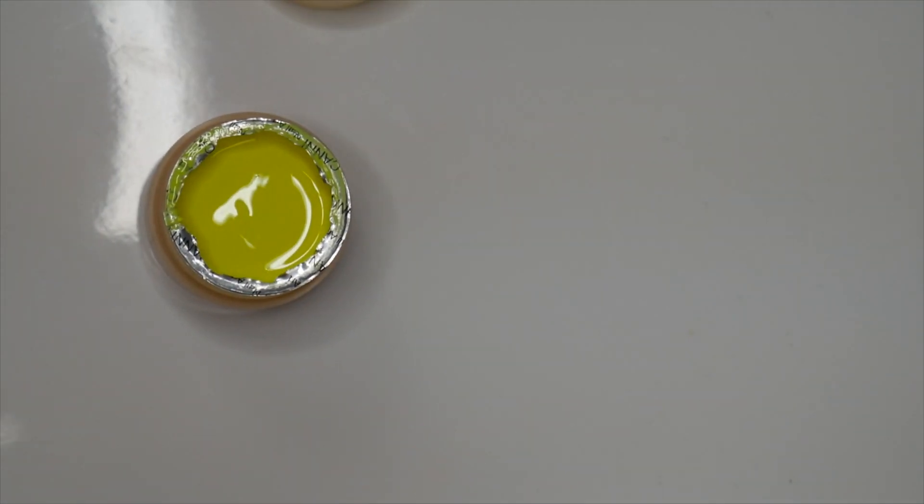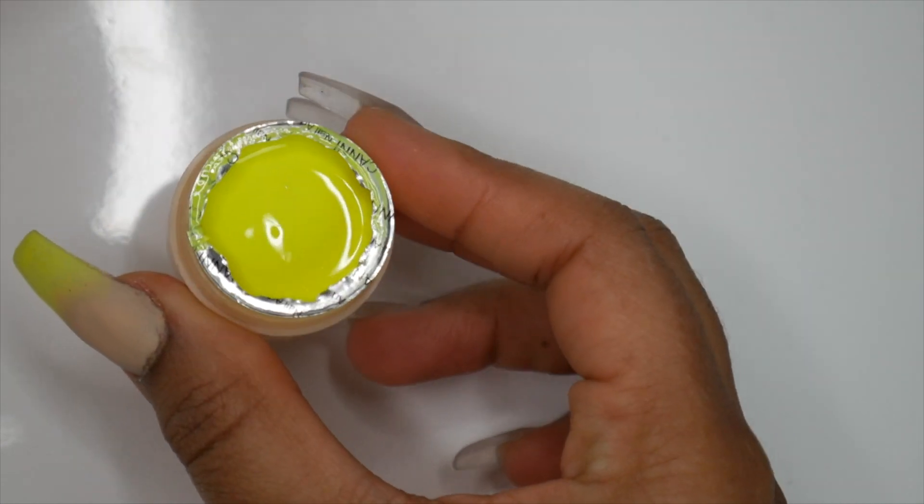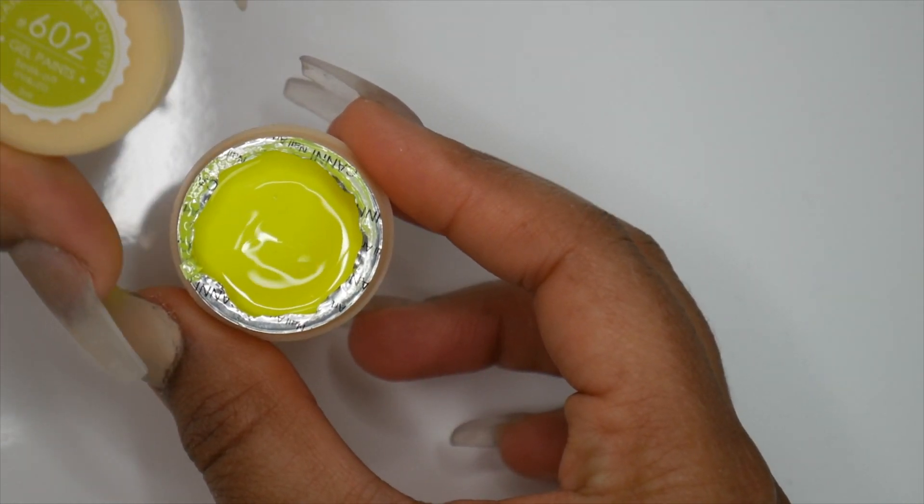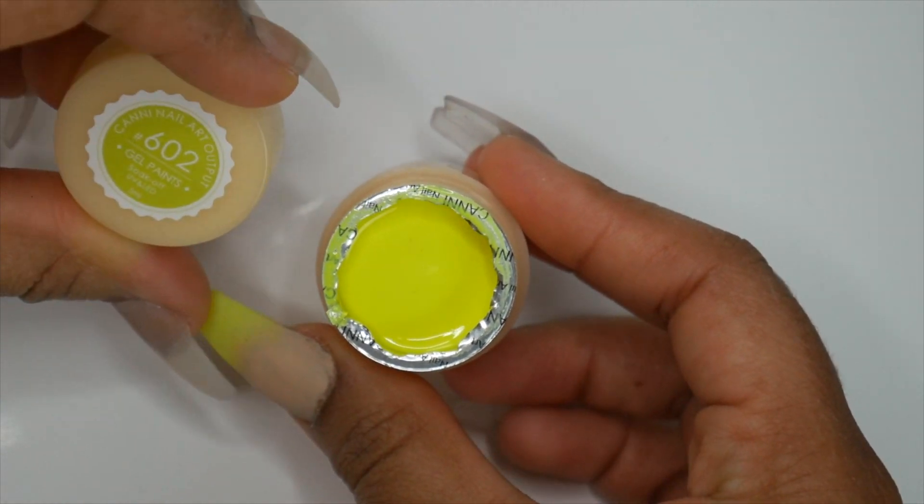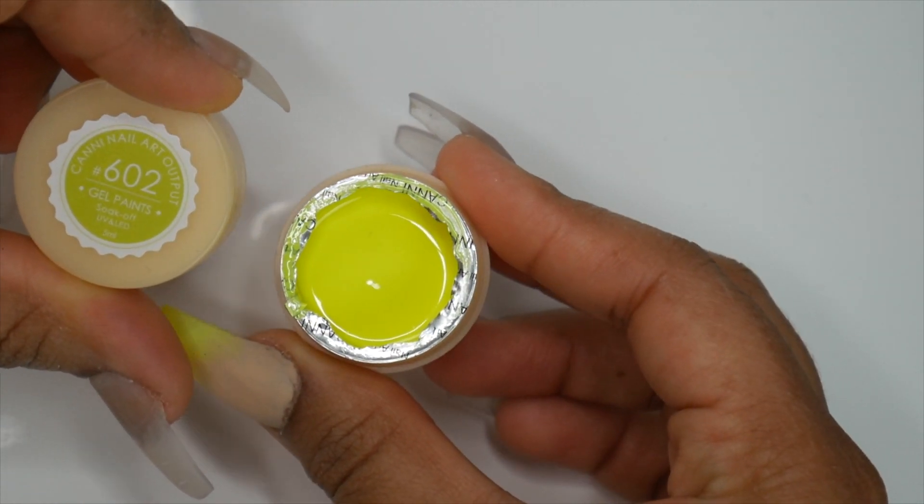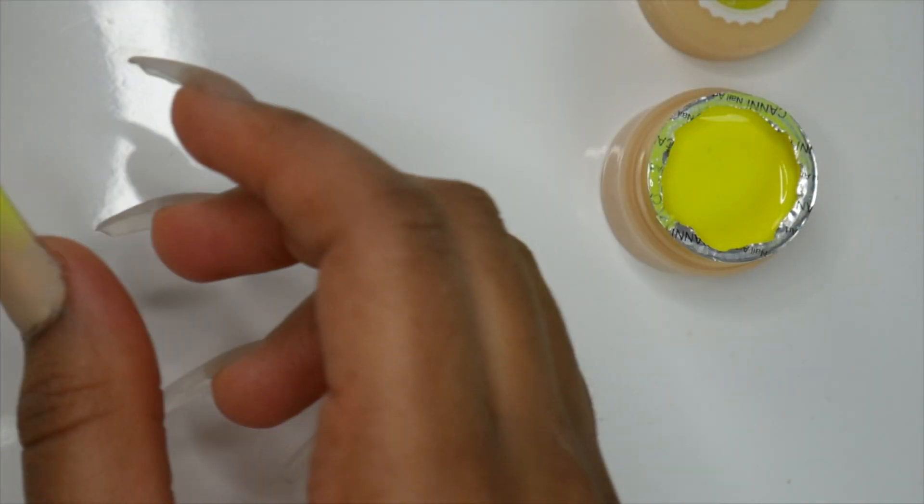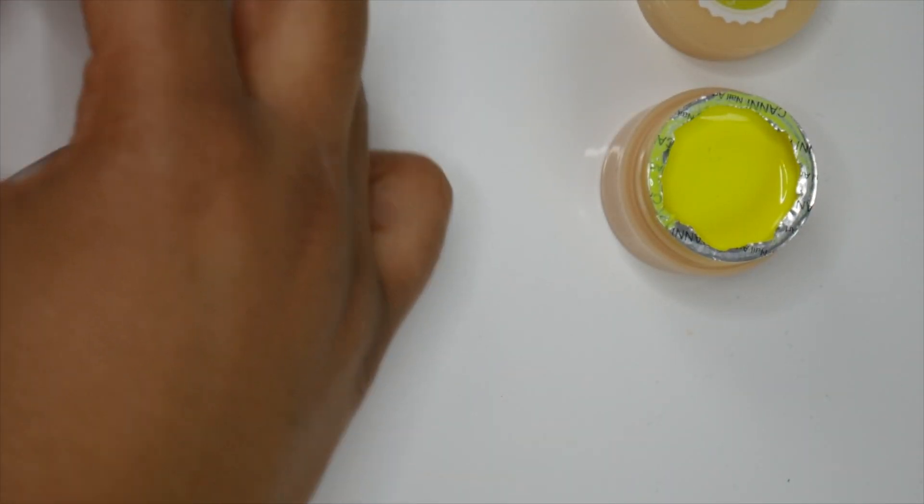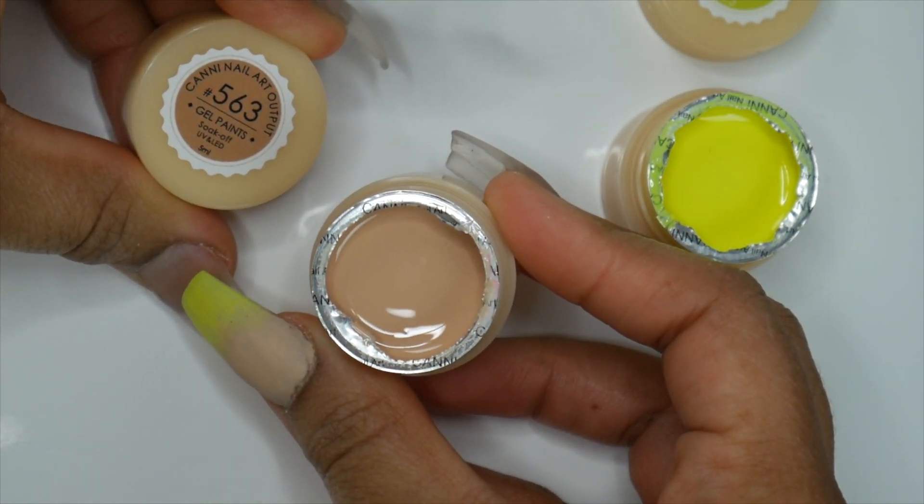Alright guys, so this design is super easy. You're only going to need a few products. The first one is a bright neon yellow by the brand Canny, their gel paint in number 602. As you can tell, I already did one nail so I wanted to see how it would look. The next color is by the same brand, number 563.